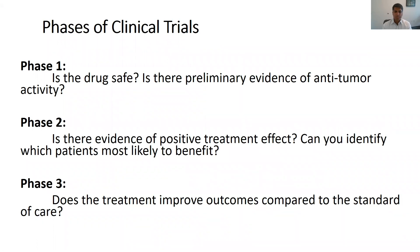The three phases of clinical trials refer to the different phases of testing for a given drug or device that's being used to diagnose or treat prostate cancer. In phase one clinical trials, we aim to determine whether a drug is safe, what is the right dose to use, does the body adequately absorb and metabolize the drug, and is there preliminary evidence of anti-tumor activity?